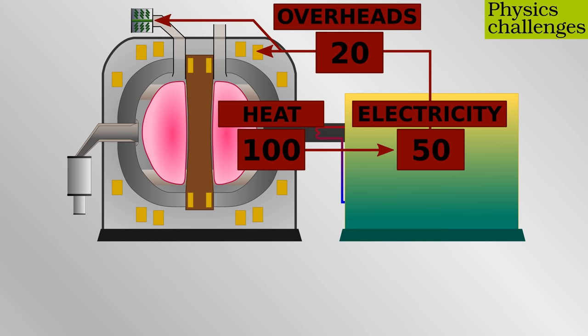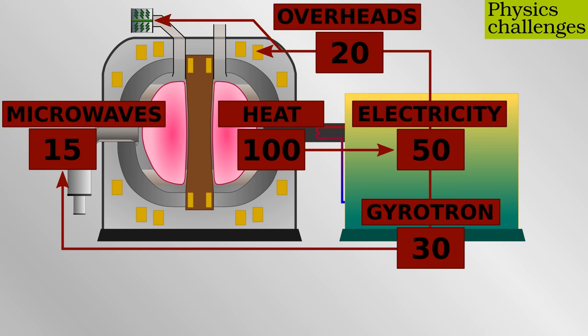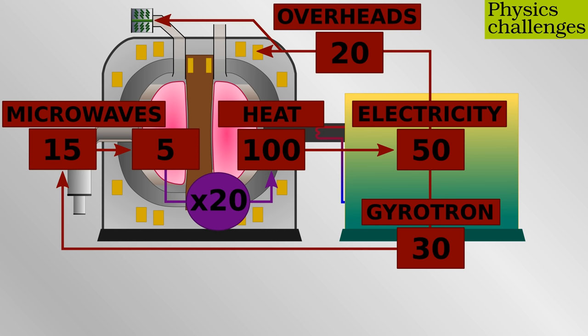Suppose we only use a technique called electron cyclotron resonance heating, where energy is delivered to the electrons in the plasma by microwaves. The microwaves will be generated by gyrotrons at, say, 50% efficiency for a total of 15 units of energy. The microwaves are transmitted through waveguides into the reactor. Some are lost on the way, some are absorbed by the walls, some are scattered or absorbed by edge plasma that will never get hot enough to undergo fusion reactions. Ultimately only a third of the microwaves, five units of energy, are absorbed in the core where they will enable fusion reactions.